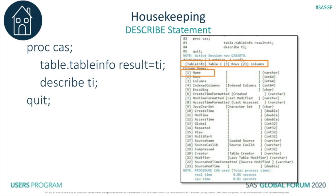If I want to loop over all the tables in a specific CAS caslib, I would first need to know the tables that are in that caslib. The table info action gives me the names of the tables. I have funneled the names into a result table called TI. Before I do any looping, I run a describe statement. In the log, I can see the result table contains a dictionary. The dictionary name happens to match the action name — table info. The log also lists the columns in the table info dictionary. The one that is important to me is called name — it holds the names of the tables in the CAS caslib. I now know that the result table I need to use to loop over is TI.TableInfo, and the name of the column that I care about is name.